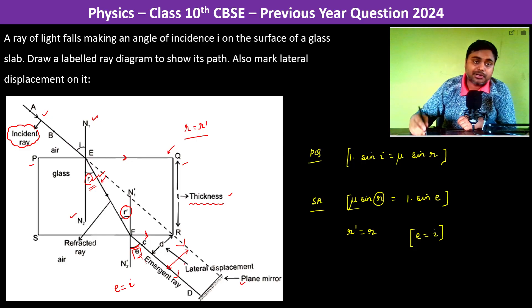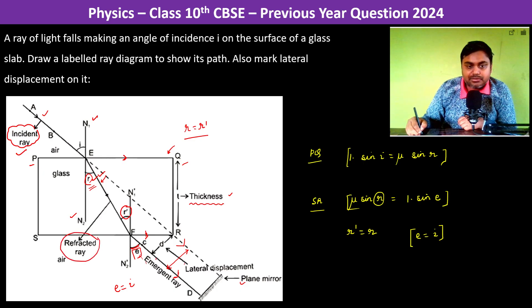All these things have to be marked. So we have to mark the incident ray, we have to mark the refracted ray which is there inside the glass slab, and then we have to mark the emergent ray.